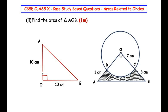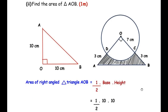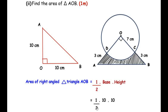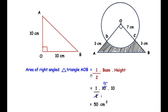Taking OA as the height and OB as the base, the formula for area of the right angle triangle AOB is: half times base times height. Base is 10 centimeters and height is 10 centimeters, so area = (1/2) × 10 × 10 = 50 centimeters square.